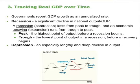We call a significant decline in real GDP a recession, and an especially lengthy and deep recession a depression. A recession or contraction lasts from peak to trough, and an economic upswing or expansion runs from trough to peak. Peak is the highest point of output before a recession begins; trough is the lowest point before a recovery begins. The economy's relatively short-term movement in and out of recession is called a business cycle. The most significant human problem associated with recessions and depressions is that a slowdown in production means firms need to lay off or fire workers. Losing a job imposes painful financial and personal costs on workers and their families, and even those who keep their jobs may find wage raises are scarce or may face pay cuts.